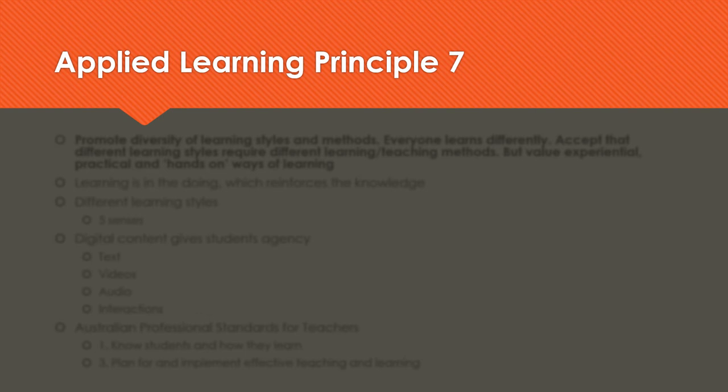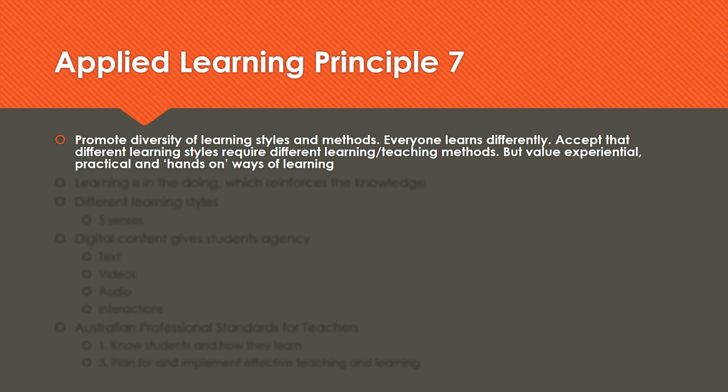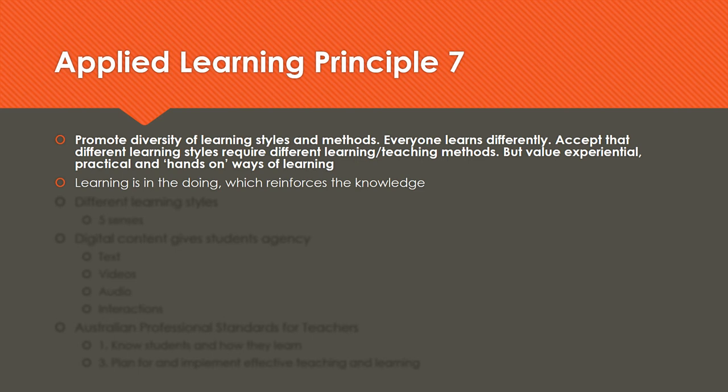Applied Learning Principle 7 is promote diversity of learning styles and methods. Everyone learns differently. Accept that different learning styles require different learning and teaching methods, but value experiential, practical and hands-on ways of learning. Learning is in the doing, which reinforces the knowledge with the practical tasks. Different learning styles can be thought of with the five senses: we have auditory learners who like to hear things, tactile learners who like to touch things and have a go, and people who like to see things demonstrated before they try. The other two senses — smell and taste — can also be pretty useful in certain industries.